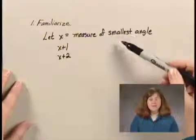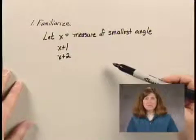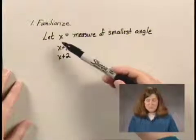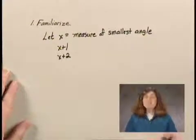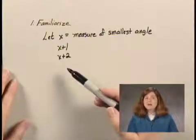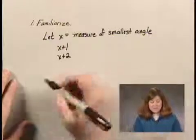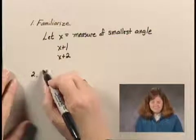This would be the smallest angle, the next biggest angle, and the next biggest angle. We don't know what x is, but when we find x, we can easily find x plus 1 and x plus 2. And we also know that the sum of these three has to be 180 degrees, which we can go directly now to the translate step.